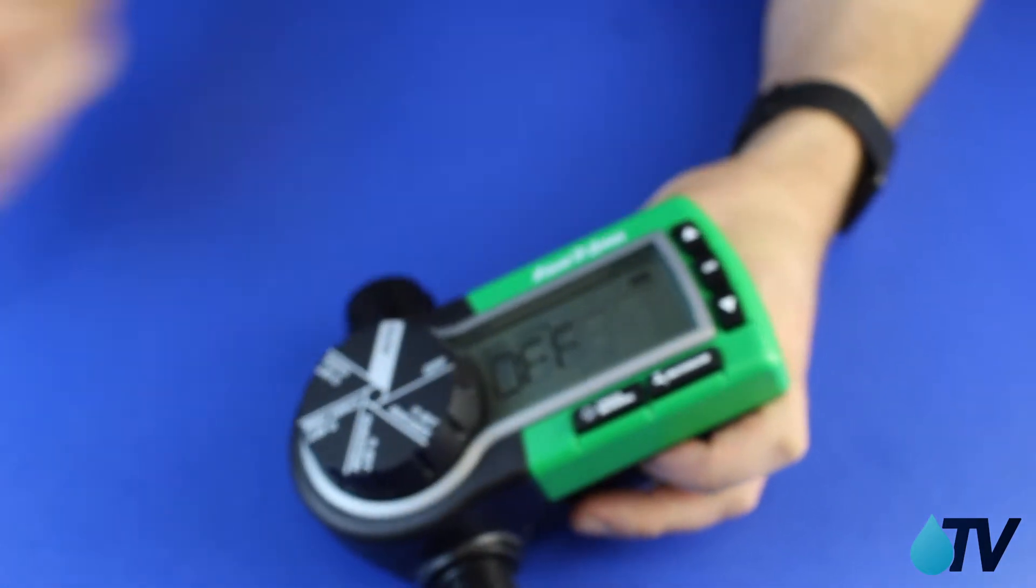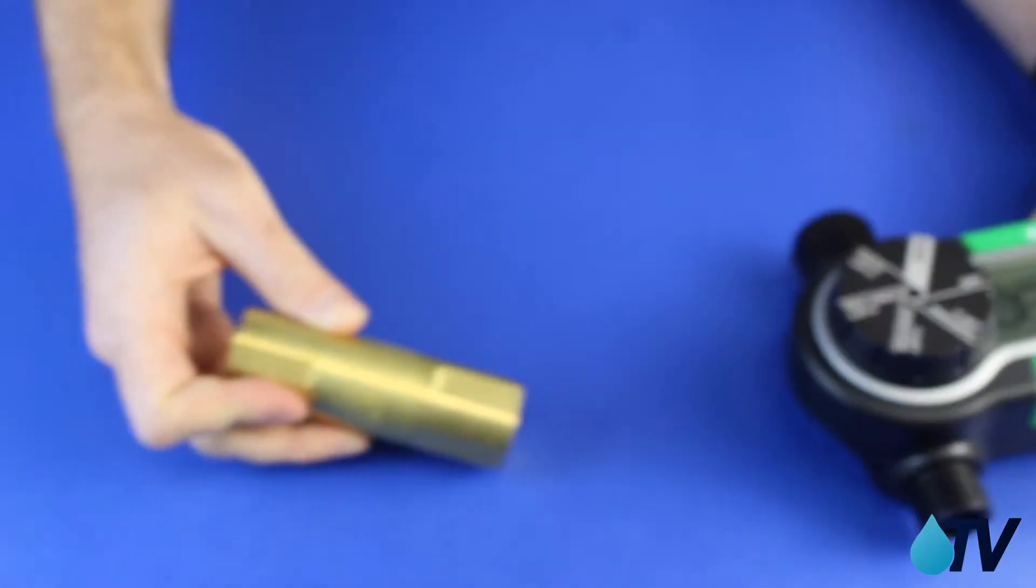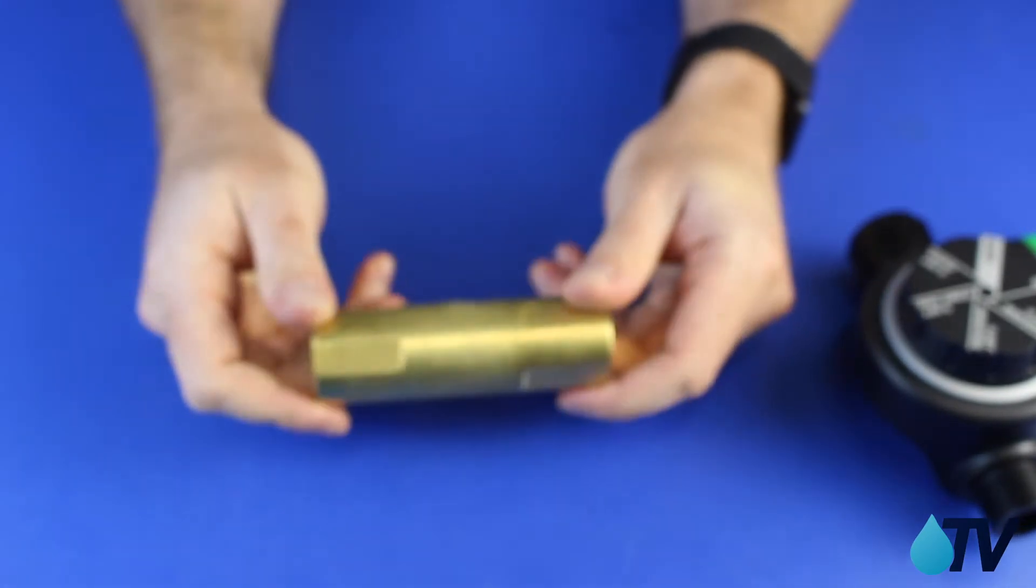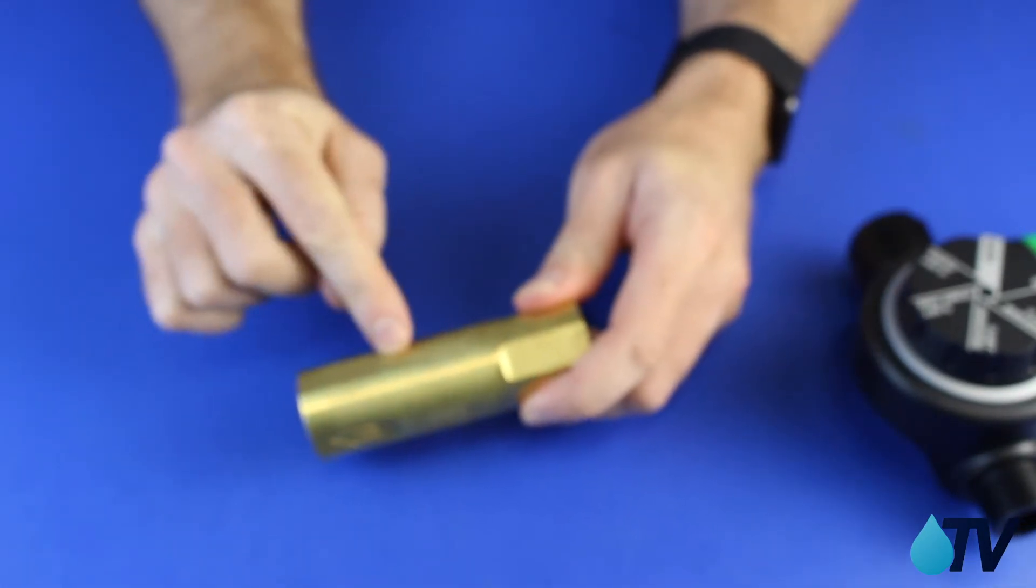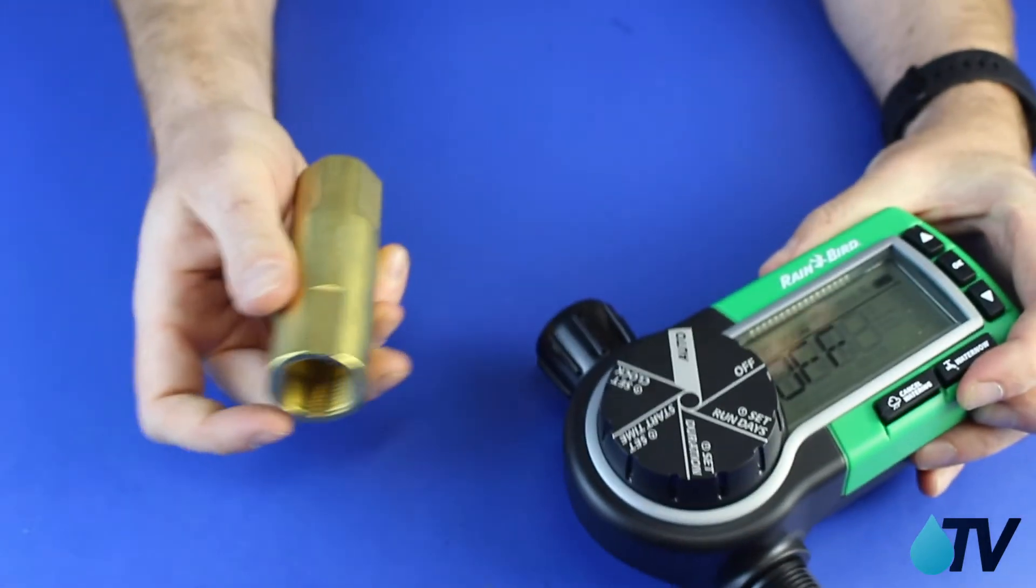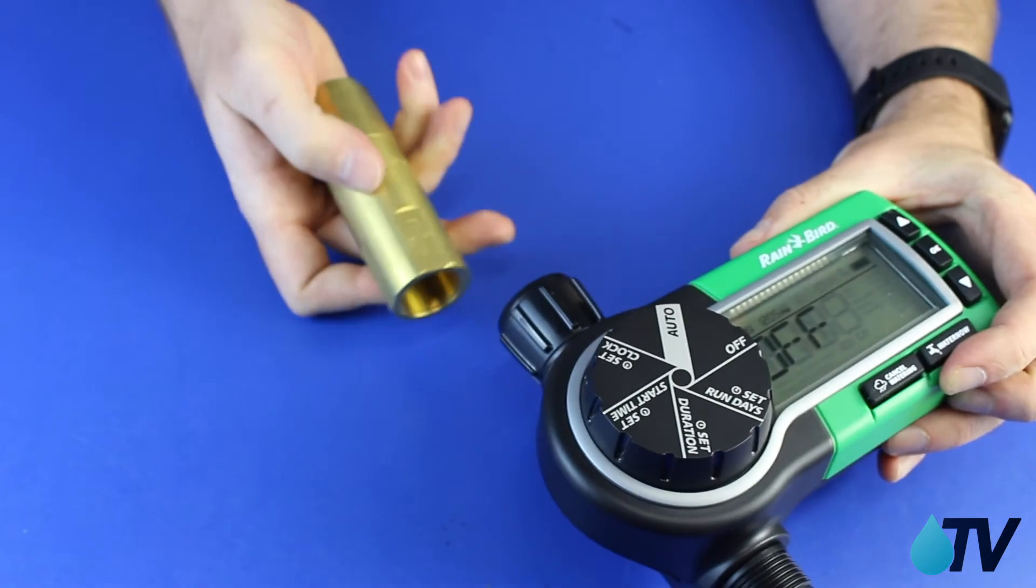So what you're going to need is one of these: a pressure reducer. So this one's rated at 500 kPa. Very comfortable for a tap timer like this and what we're going to do is put that at the tap just above the timer there.